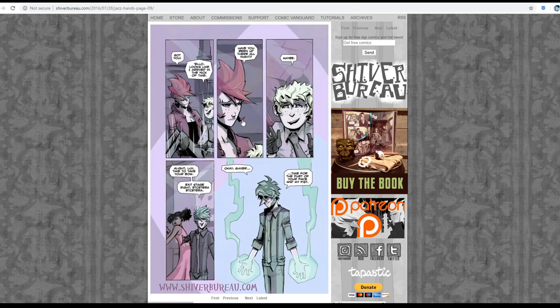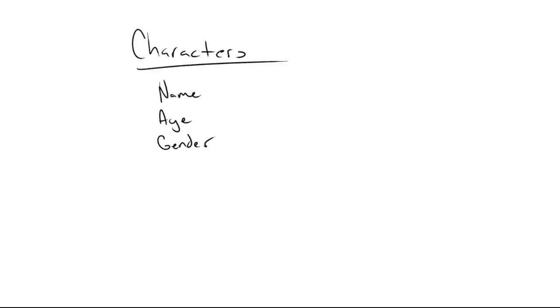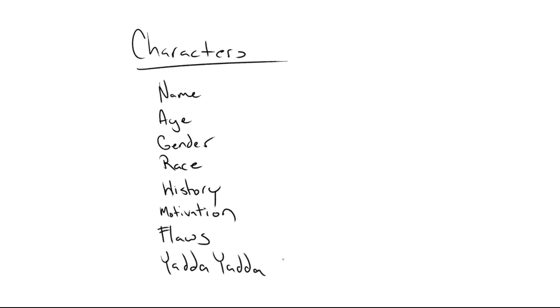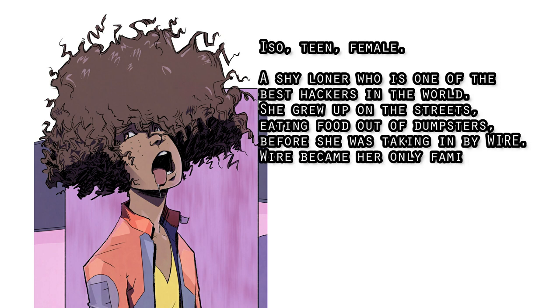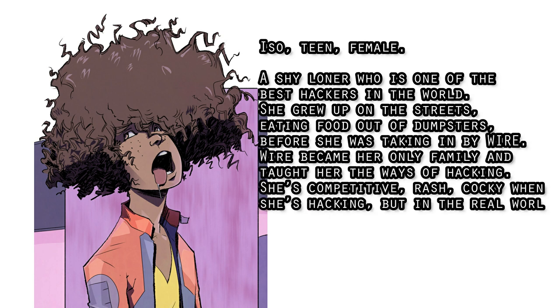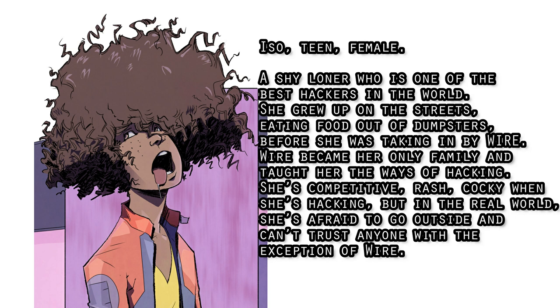Now we have my favorite — characters. You only need a short bio here. Include things you think are important: age, gender, race, story — and just for the important characters that have a direct impact on the story and the vibe. So for Haxor, ISO: teen, female, a shy loner who is one of the best hackers in the world. She grew up on the streets eating food out of dumpsters before she was taken in by Wire. Wire became her only family and taught her the ways of hacking. She's competitive, rash, cocky when she's hacking — but in the real world, she's afraid to go outside and can't trust anyone with the exception of Wire.